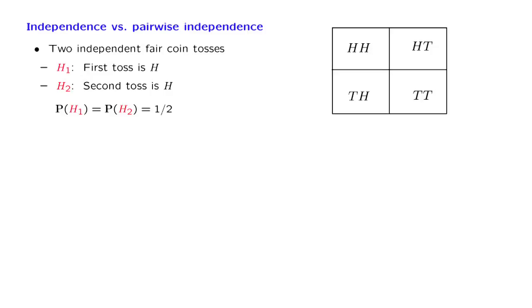The model is simple. We have a fair coin, which we flip twice. So at each flip, there is probability 1/2 of obtaining heads. Furthermore, we assume that the two flips are independent of each other.